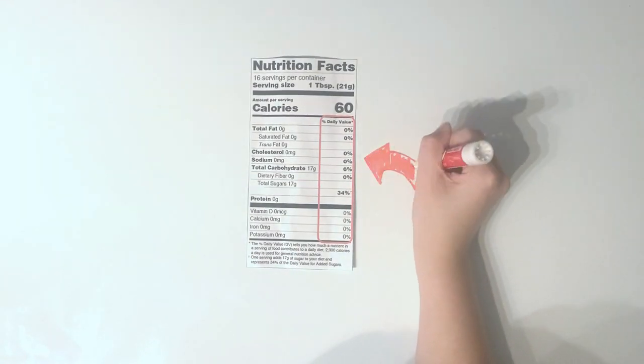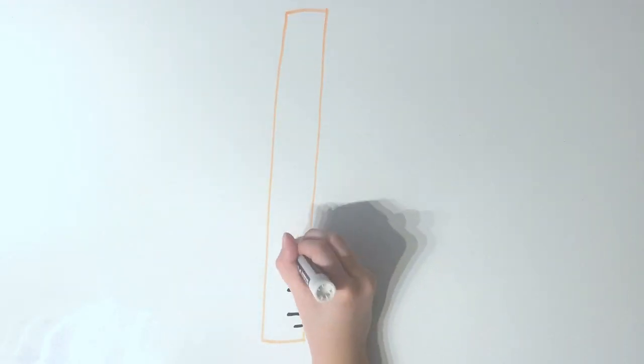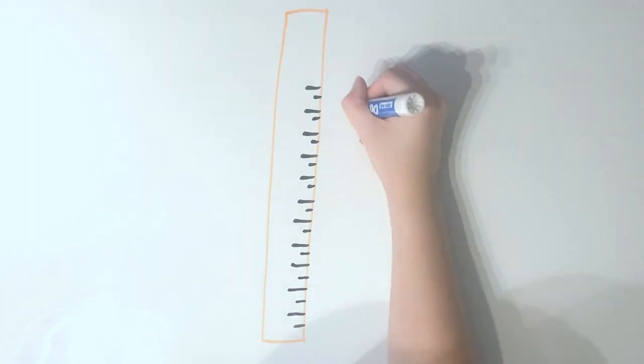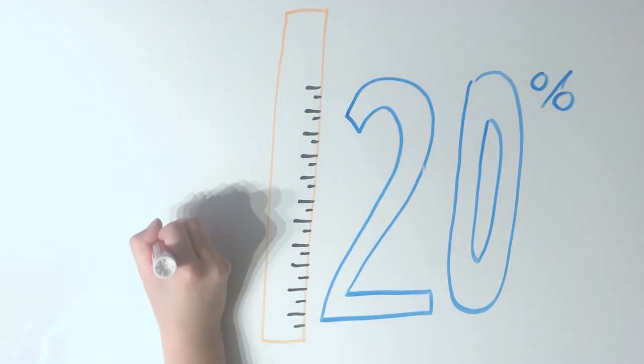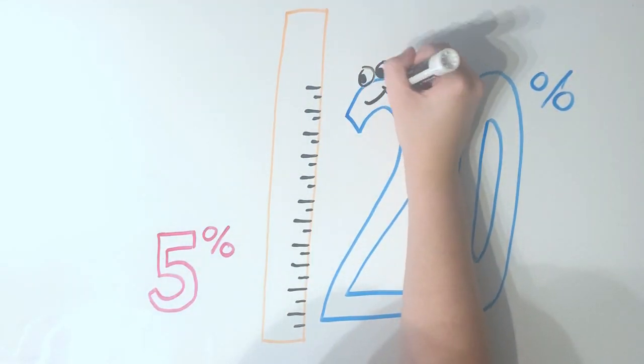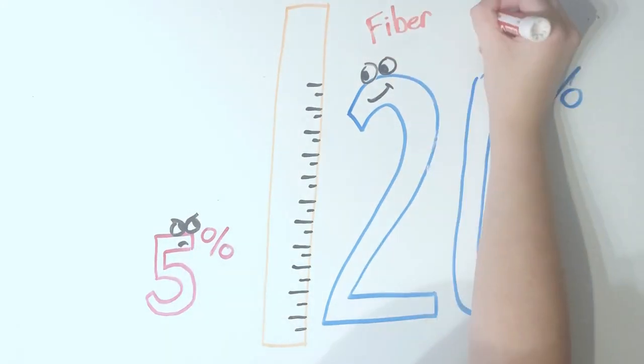Percentage of daily values is a quick way we can tell if a food is a good source of certain nutrients or not. If a food has 20% or more of a nutrient's daily value, it is high in that nutrient. If a food has 5% or less of a nutrient's daily value, it is low in that nutrient.